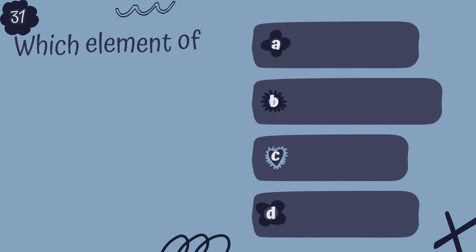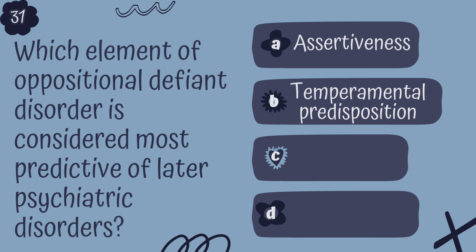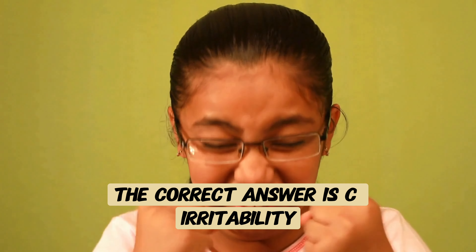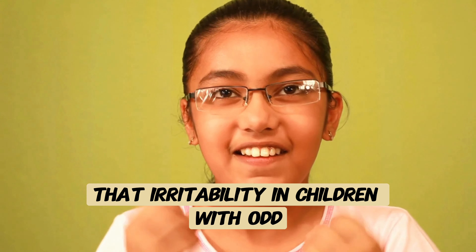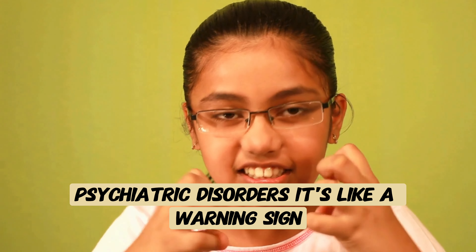Question 31. Which element of oppositional defiant disorder is considered most predictive of later psychiatric disorders? A. Assertiveness, B. Temperamental predisposition, C. Irritability, or D. Stability of preferences? The correct answer is C, irritability. Studies have consistently shown that irritability in children with ODD tends to be strongly associated with the development of later psychiatric disorders — it's like a warning sign indicating potential future mental health challenges.